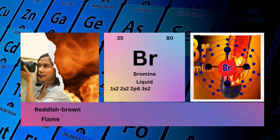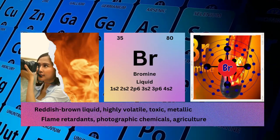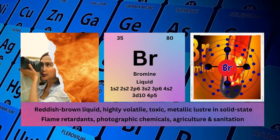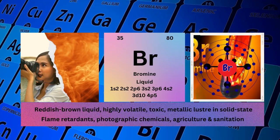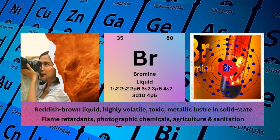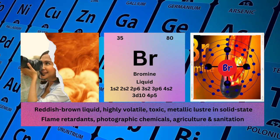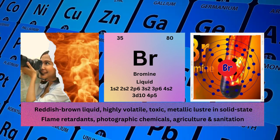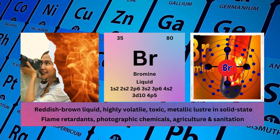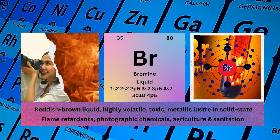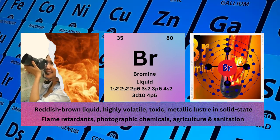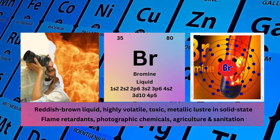Bromine. Atomic number 35. Mass number 80. Symbol BR. State liquid. Electronic configuration 1s2 2s2 2p6 3s2 3p6 4s2 3d10 4p5.